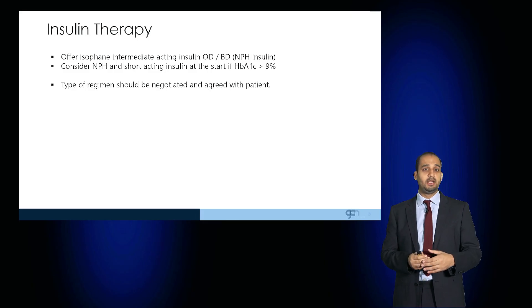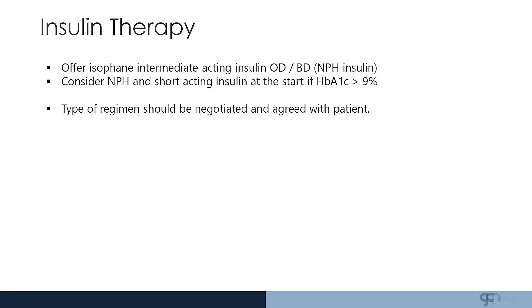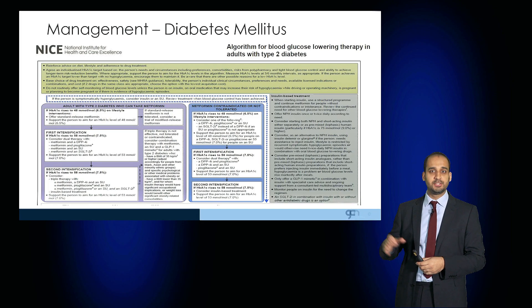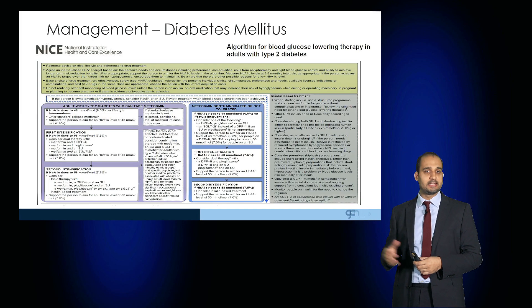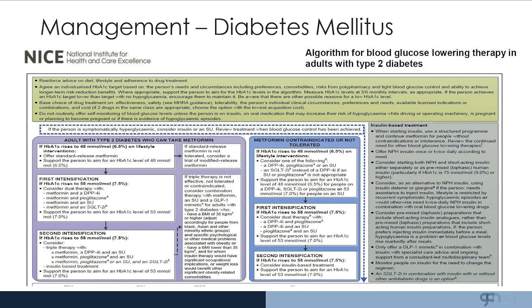Isophane as an intermediate insulin or short-acting insulins can be offered, and the regimen needs to be negotiated and agreed with the patient, taking into consideration their lifestyle. This slide summarizes the NICE guidance on introducing metformin, followed by first and second intensification, and the introduction of insulin-based regimens.